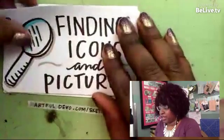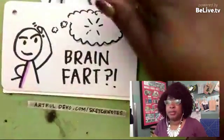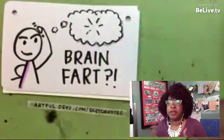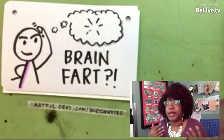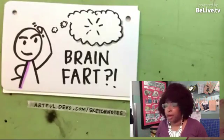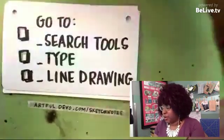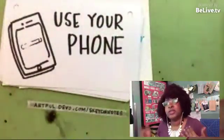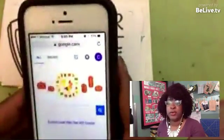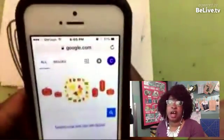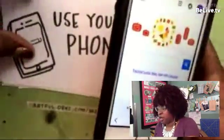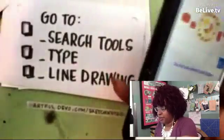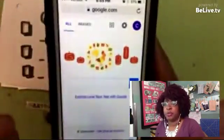So the first thing is that sometimes we do have brain farts — like we've sketched a word a bunch of times, or we know what certain things look like, but we just have a brain fart. So what to do in those cases? Well, you can use your phone. I have one right here. You can Google up images. I do this a lot at church when things come up.